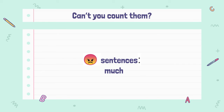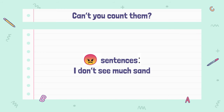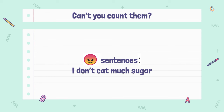If you can't count them and you have a negative sentence, you use much. So: I don't see much sand. I don't drink much water. I don't eat much sugar. That is negative, and you can't count sugar — you can't say 12 sugar.